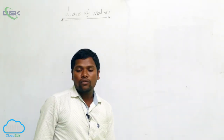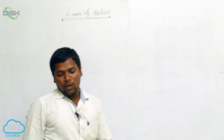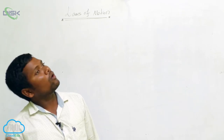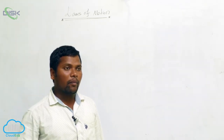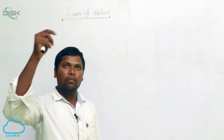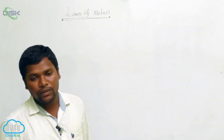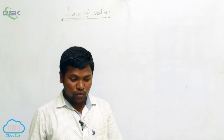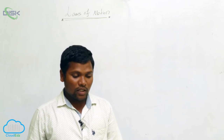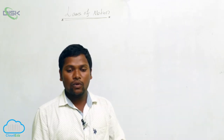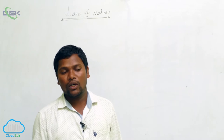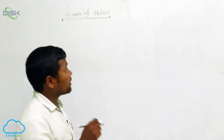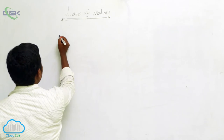Introduction to the laws of motion. Suppose we take a ball and throw it into the air — what happens? It comes back down. Why is it coming down? It means some force, some power, is pulling it downward. What is that pulling power?